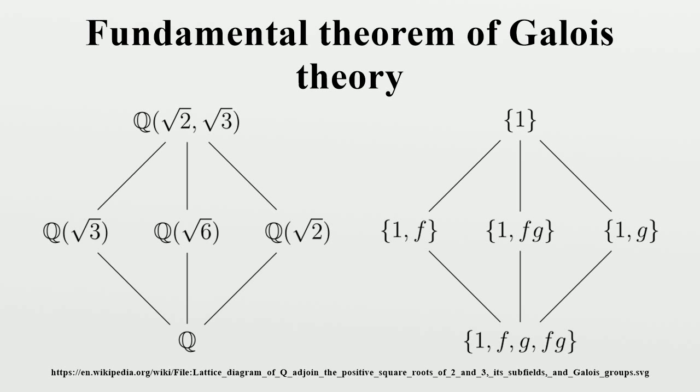There are three subgroups of order 2, namely {1,g}, {1,gf}, and {1,gf²}, corresponding respectively to the three subfields Q(θ), Q(ωθ), and Q(ω²θ).